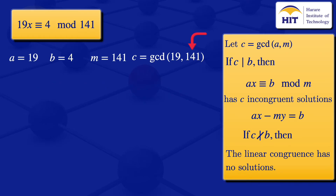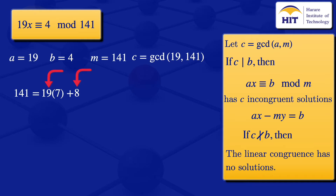For the Euclidean algorithm, the larger number is our dividend and the smaller is our divisor. So 141 = 19 × 7 + 8. Then applying the division algorithm to 19 and 8: 19 = 8 × 2 + 3, since 8 × 2 = 16 and 19 − 16 = 3.